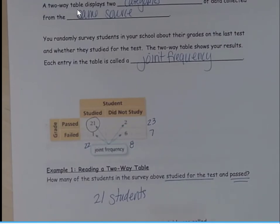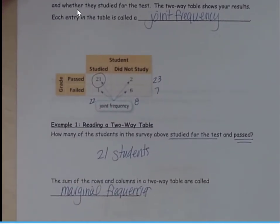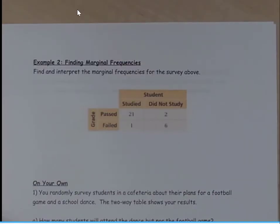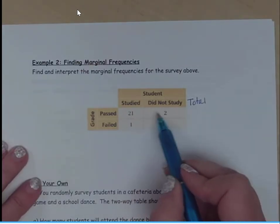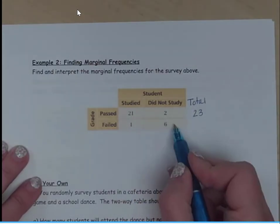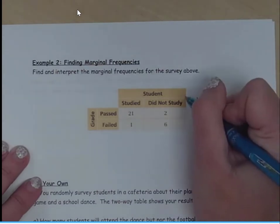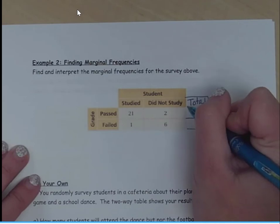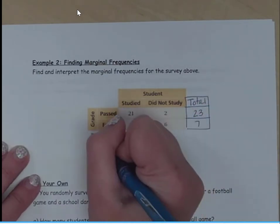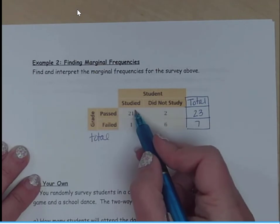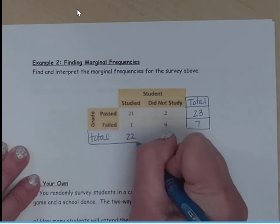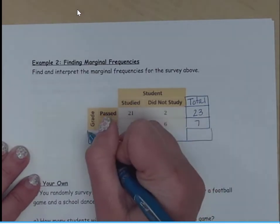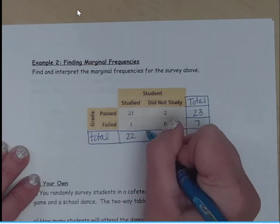So let's take a bigger look at those now. What I want to do is find those frequencies. I'm going to add another column here called total. So my total here, 21 plus 2 as you recall was 23, 1 plus 6 is 7. Then I'm also going to add my total here. That's 22, this is 8.